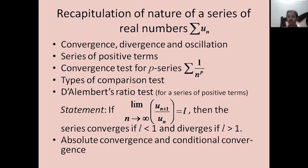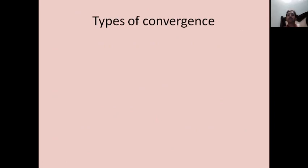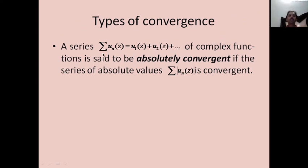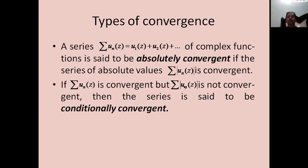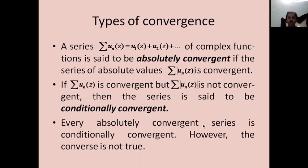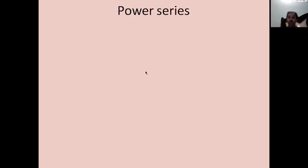These are results to remember when discussing series of complex variables. For a series of complex functions sigma u_n(z), it is said to be absolutely convergent if the series of absolute values sigma |u_n(z)| is convergent. If sigma u_n(z) is convergent but sigma |u_n(z)| is not convergent, the series is said to be conditionally convergent. Also, every absolutely convergent series is conditionally convergent, but the converse is not true.